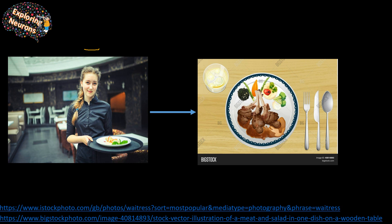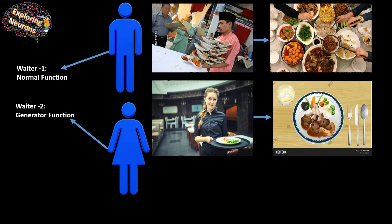She remembers which order was served: first she'll give you the starters, then she'll come back with the main course, then she'll bring the dessert. In this way your table is not filled up and you're getting everything in sequence. So what waiter B does is bring your order in sequence, one by one.